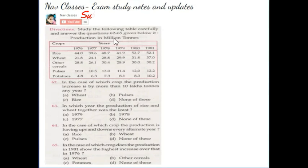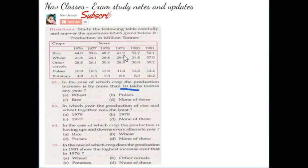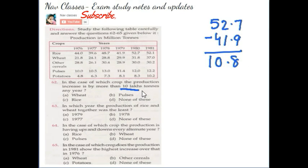The first one is based on bar diagram. Production and crops are given. Question number 62 asks: in the case of which crop does the production increase by more than 10 lakh in any year? The question is asking for an increase of 10 lakh. Without calculating, we can see there is a gap — 52 minus 41 is around 10. If we subtract, we get 10.8. So in the case of rice, the answer is rice.